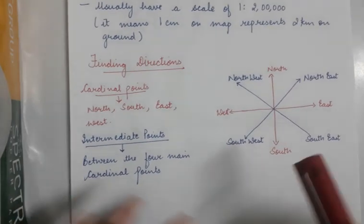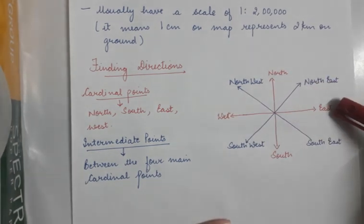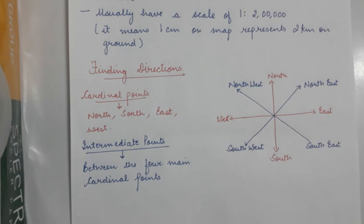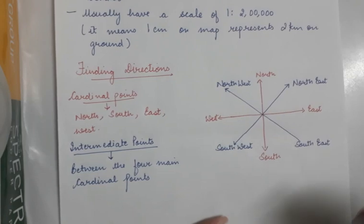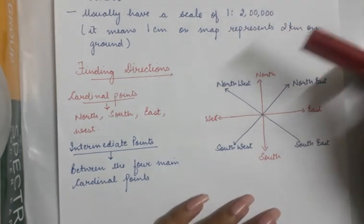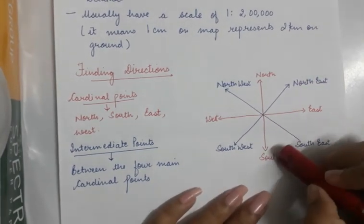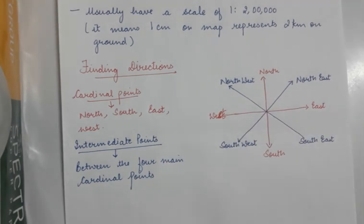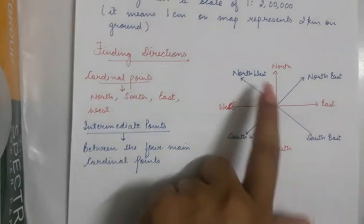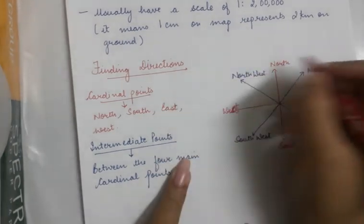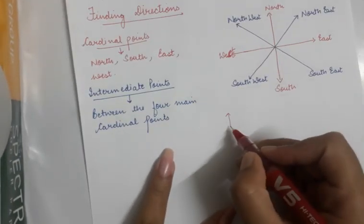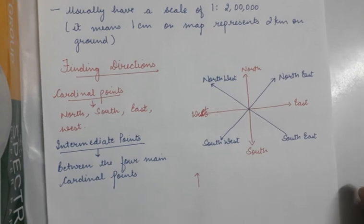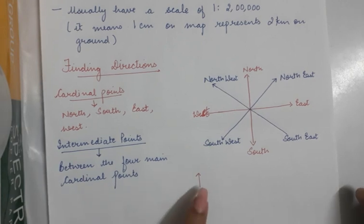Now, how can we find directions on a map? I have drawn the cardinal points with a red pen and the intermediate points with a blue pen so that it is clear and easy for you to understand. The four main directions are north, south, east, and west — these are the cardinal points. If an arrow like this is shown on the map, it means that is the north direction. With the north direction marked, you can find all other directions from it.